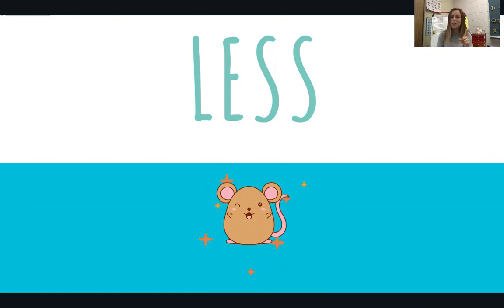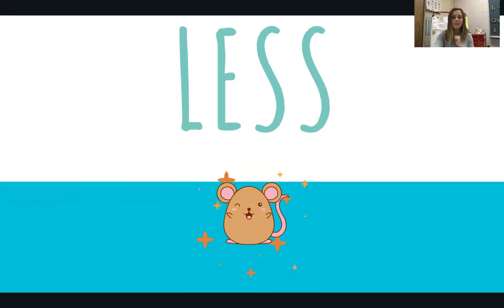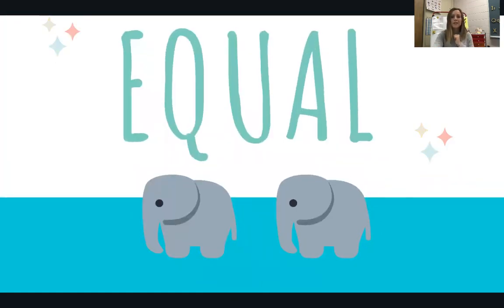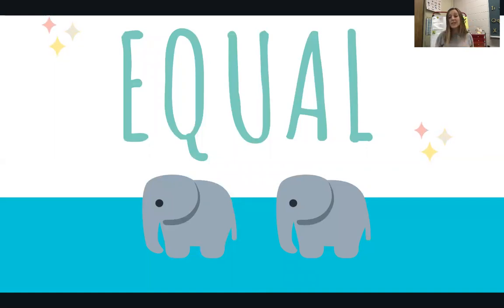Let's talk about one more word, then we can start comparing. Say the word: equal. When something is equal, it means that they're the same. That could be the same number of items, or the same size — but equal means they are the same.